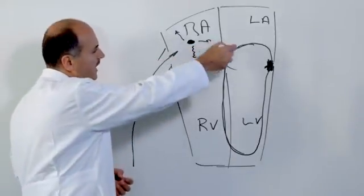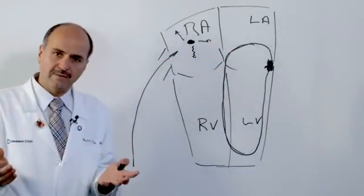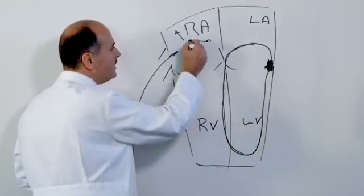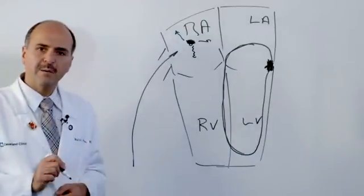When we map it, we move the catheter, so that we can record the electrical activity inside the heart, so that we can see where that circuit is, and we can see where that electrical activity is coming from.